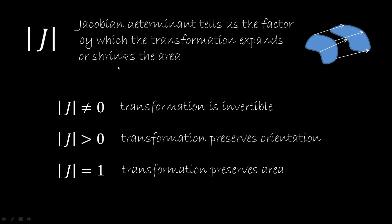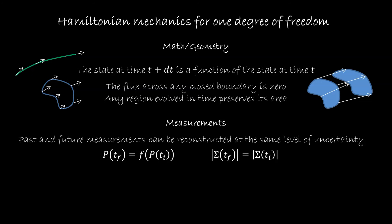The Jacobian determinant tells us the factor by which the transformation expands or shrinks the area. If you have an initial region of phase space and then transform it, the final area equals the initial area times the determinant of the Jacobian. A nonzero Jacobian means the transformation is invertible — if all areas collapsed to a point we couldn't go back. A positive Jacobian means we don't flip orientation, and setting it equal to one means we preserve area. So Hamiltonian mechanics for one degree of freedom, in terms of measurement, is equivalent to requiring that past and future measurements can be reconstructed at the same level of uncertainty — and preserving uncertainty means preserving area in phase space, which is exactly what Hamiltonian mechanics does.